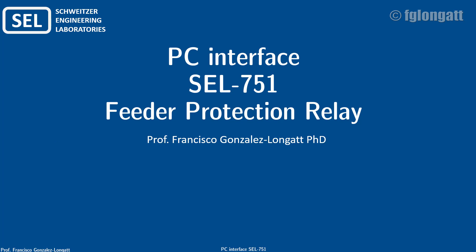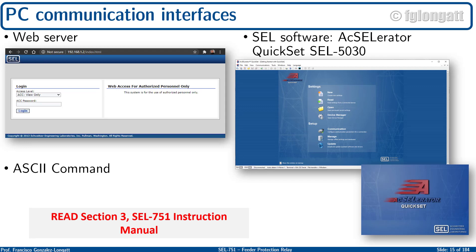The first thing you need to understand is that this relay by Schweitzer has at least three different ways to communicate between the personal computer and the protection relay. There is a very simple way to communicate, and that is a web server. The device is connected directly to the computer or through a switch using the IP address, TCP/IP protocol, and a web browser, and you can have access to the relay. Today's short video will be related to this first option — the web server.